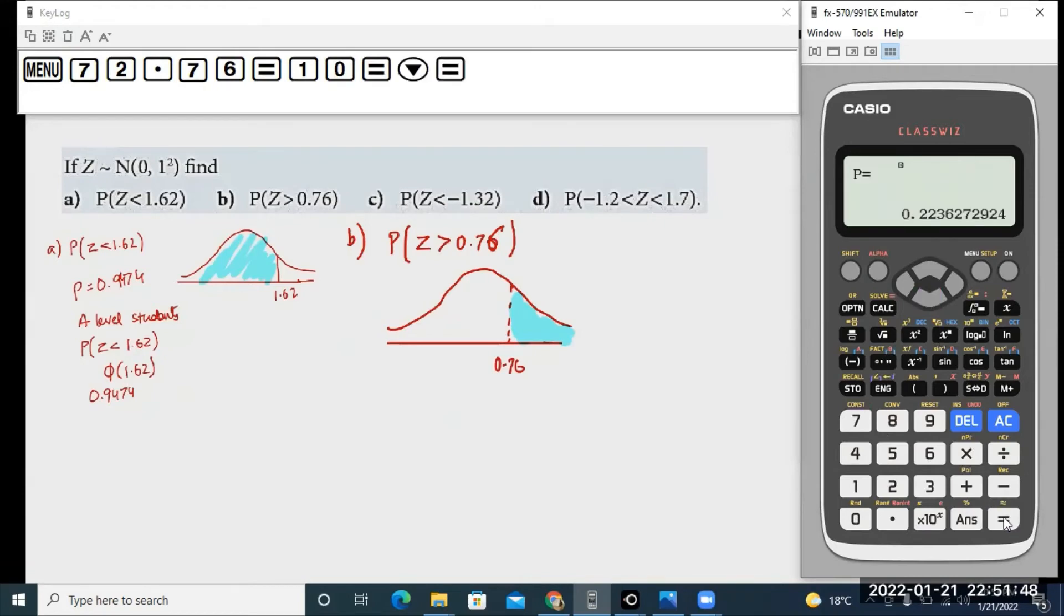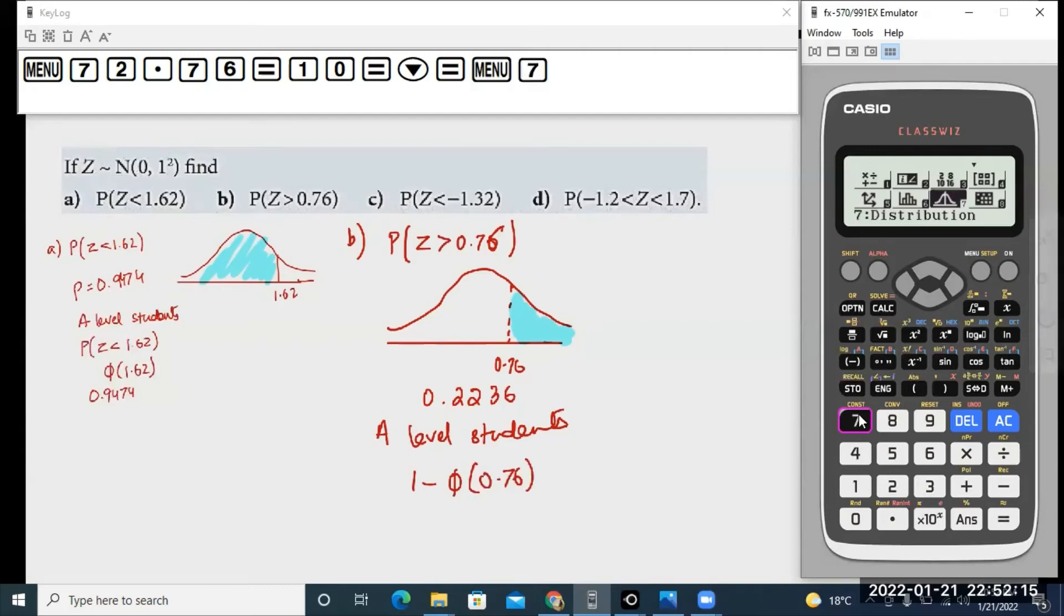Now if you were an A-level math student, what you would do instead is first apply the rules of the normal distribution and say that this has to boil down to 1 minus P of 0.76. Then on your calculator, instead of the working I just did, you would clear this.